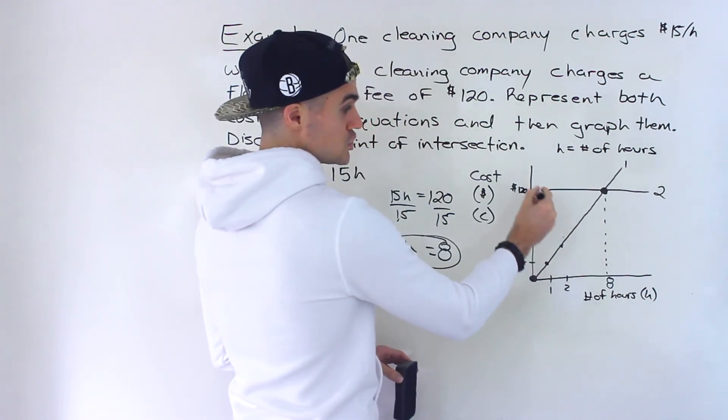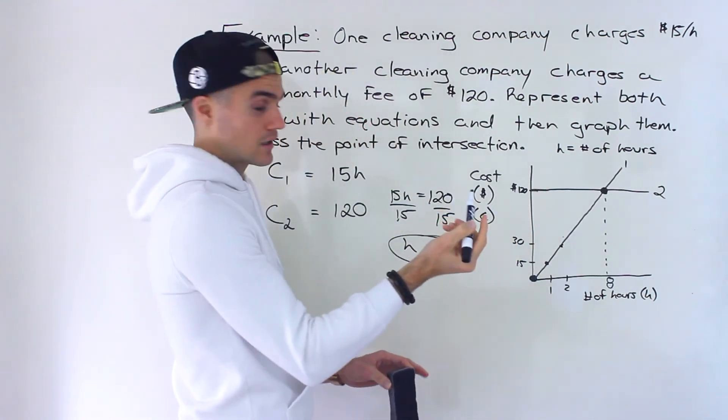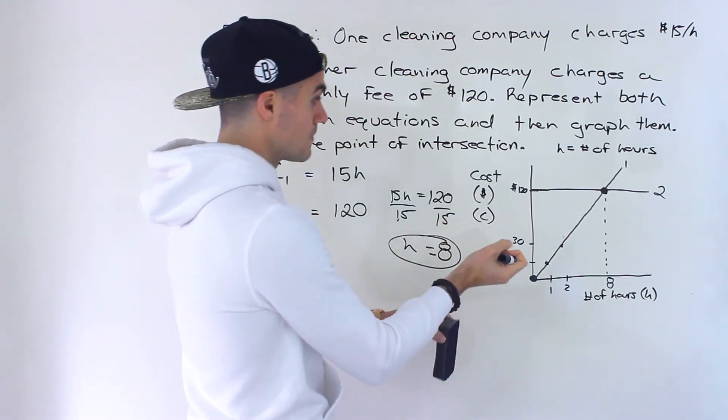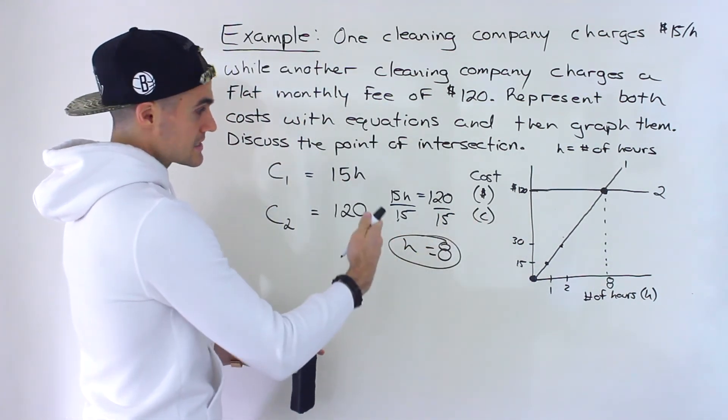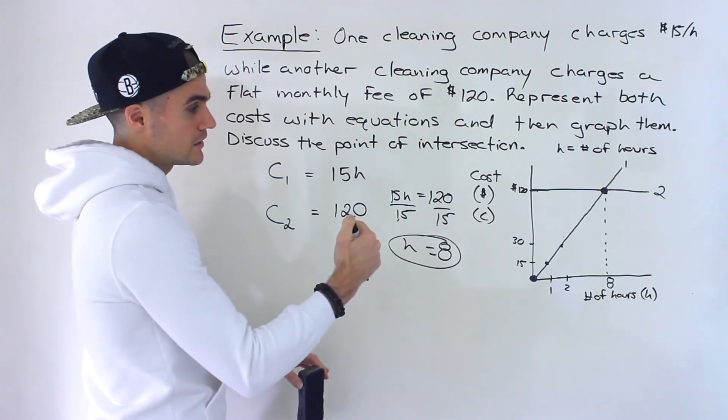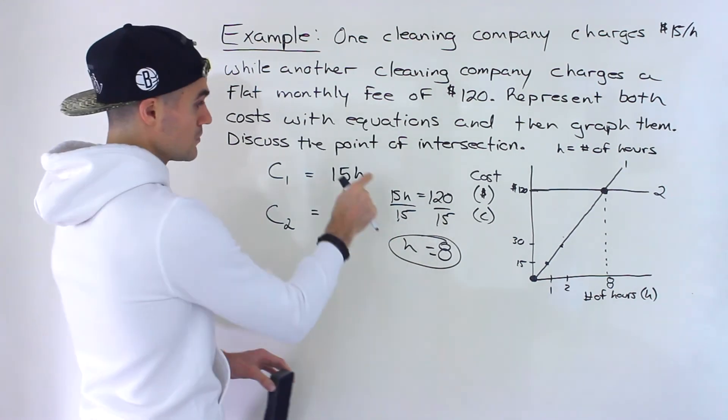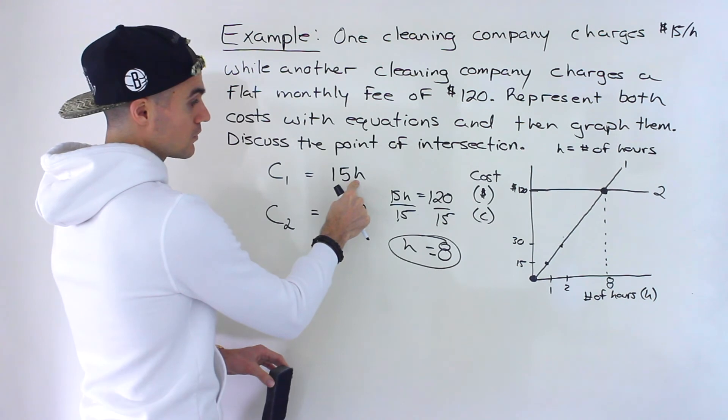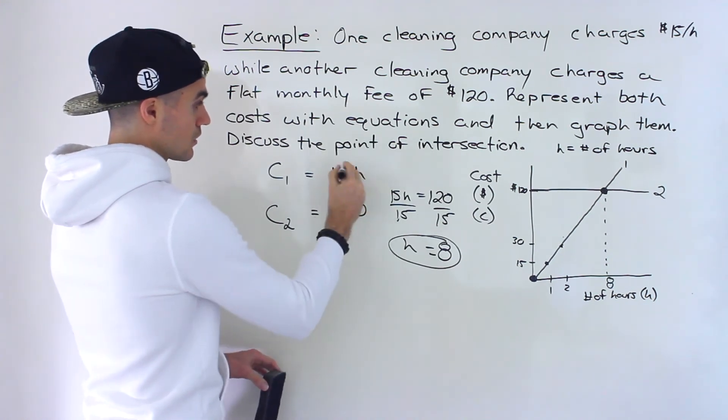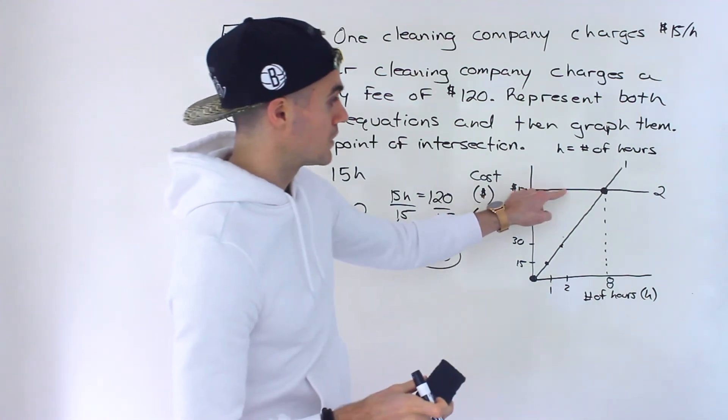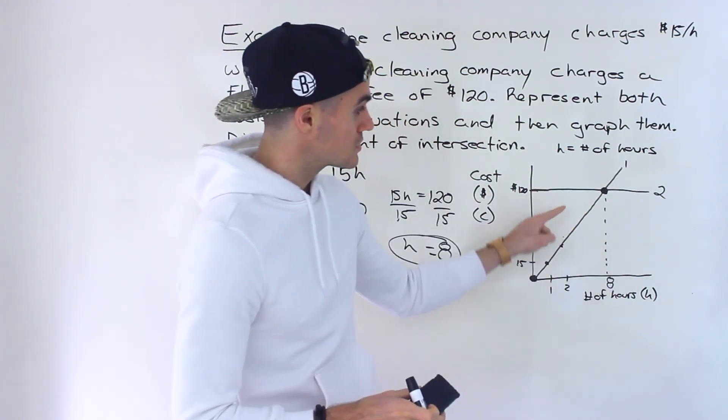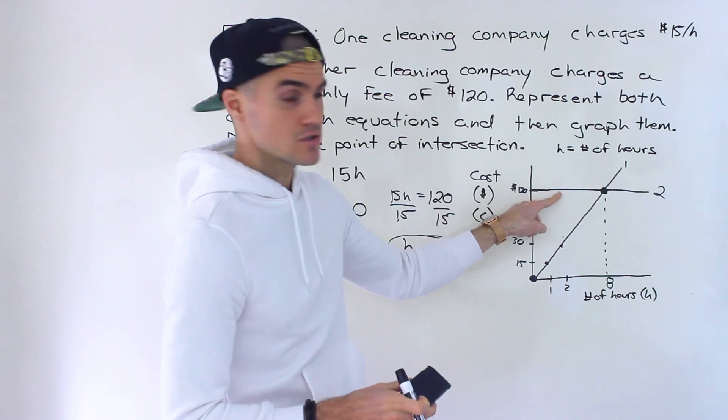You could see it on the graph and you could also see it algebraically. So let's say, let's pick something that's less than eight. So let's say you get cleaning done for four hours. Well, if we plug in four over here, we would get 60. So the cost here would be 60 while the cost still here would be 120. So anything less than eight hours, company one is cheaper than company two.